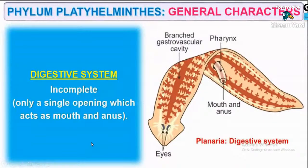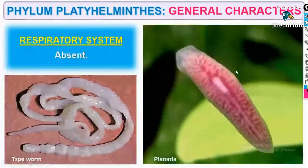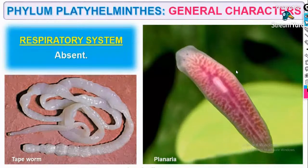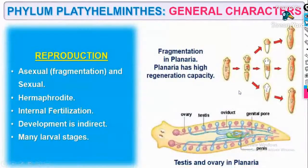The digestive system is incomplete with a single opening serving as both mouth and anus. If you check the figure, you can see this opening. No respiratory system is present. Although organ level of organization starts with Platyhelminthes, there are no organ systems — no respiratory system, incomplete digestive system, and no circulatory system.